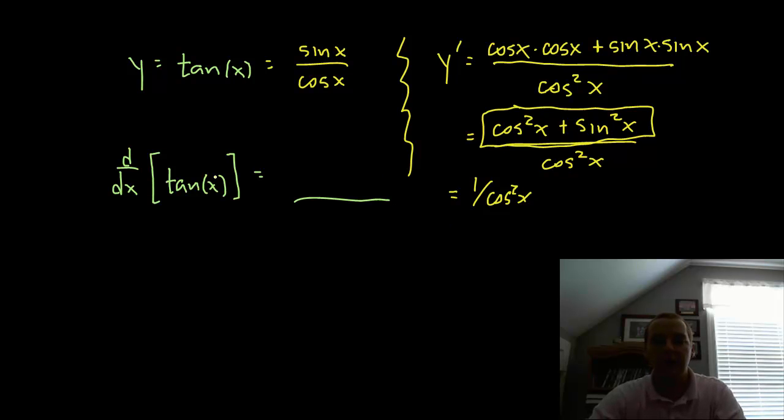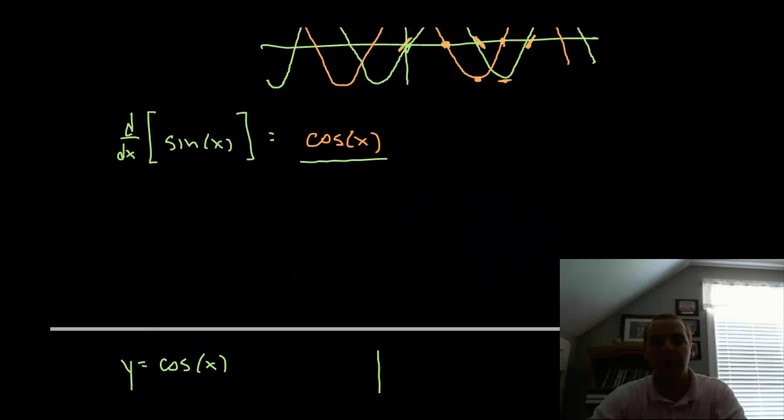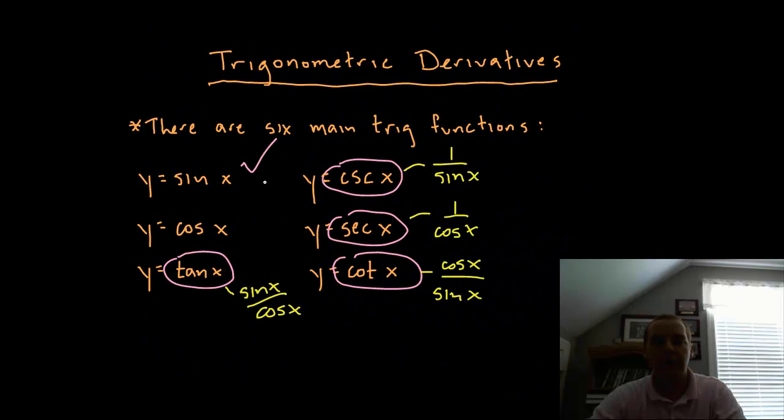Now I could write that as the derivative for tangent, but there's even a cleaner way to say that, 1 over cosine is defined as secant, so the derivative for tangent would be secant squared x. So now we have three derivatives, we've done sine x, cosine x, and tangent x.